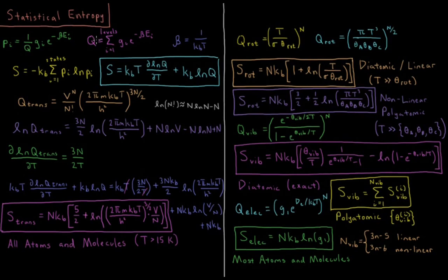The partition function is the sum over all the energy levels of the degeneracy of that level times the Boltzmann factor of that level, e to the minus beta E_i, where E_i is the energy of that energy level.